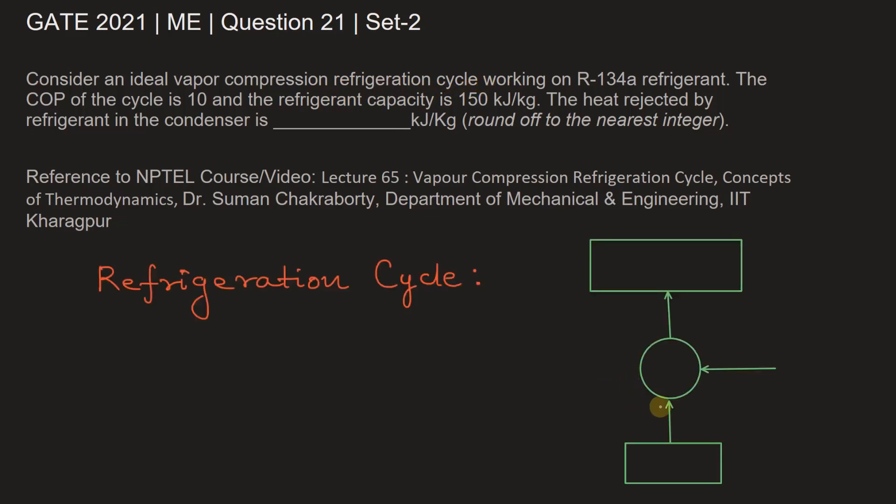So this is a schematic diagram of a refrigeration cycle. A refrigerator is a device which operates in a cycle, maintaining a body at a temperature lower than the temperature of the surrounding. Let's say this is body A which is kept at a constant temperature T1.